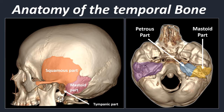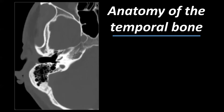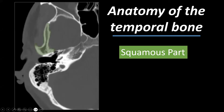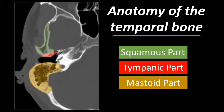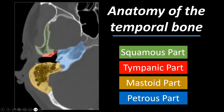Looking at axial CT images in bone window, we can identify the squamous part, the tympanic part which constitutes the bony wall of the external auditory canal, the mastoid part with many small mastoid air cells, and the very dense petrous part — triangular or pyramid-shaped — which articulates with the clivus and contains the cochlea, the semicircular canals, and the vestibule.